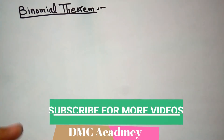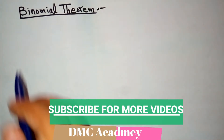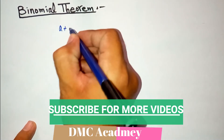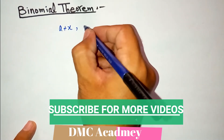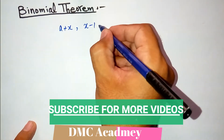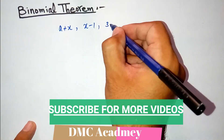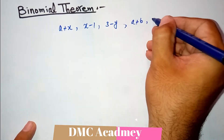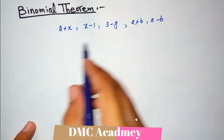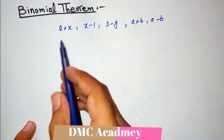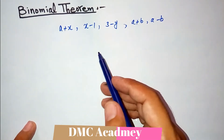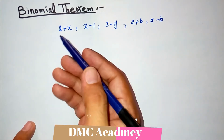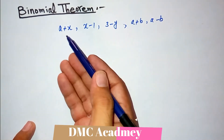Binomial theorem. Before we start the binomial theorem, we need to know what a binomial is. Binomial means all those terms which are written like a plus x, x minus 1, 3 minus y, a plus b, or a minus b. Whenever there is an operation between two terms, it will be called a binomial expression. These are binomial expressions.